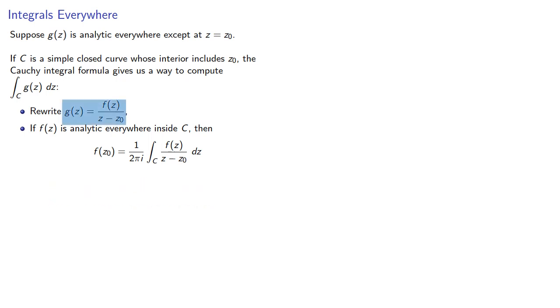Since f over z minus z0 is g, then the original integral is 2πi times f.